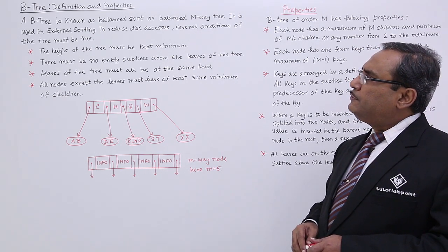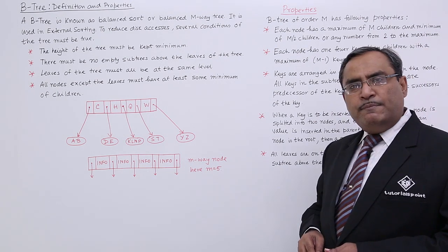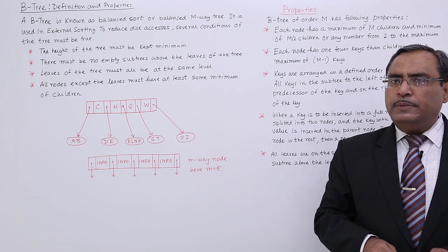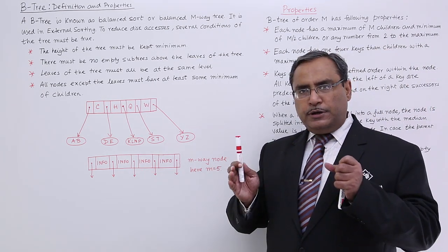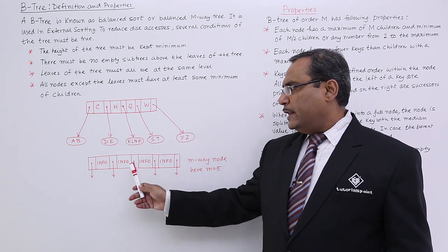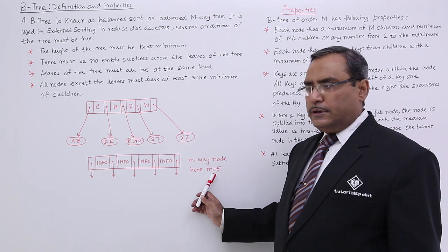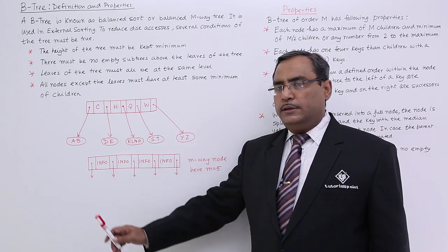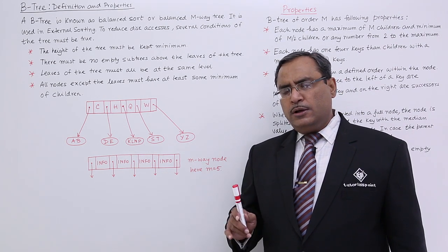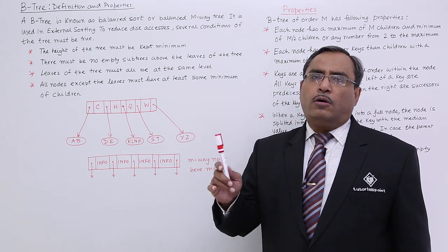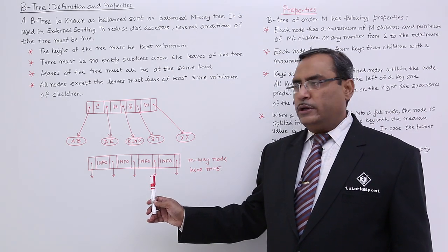B-Tree is known as a Balanced Sort or Balanced M-Way tree. What do you mean by the term M-Way? If you consider the B-Tree nodes, they will be coming like this. Here M is equal to 5, so that means 5 link fields will be there. It is known as 5 M-Way or 5 way, also known as order of M, that is the order of 5.